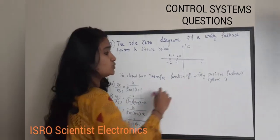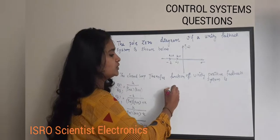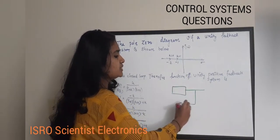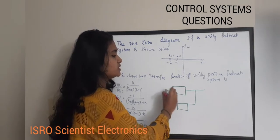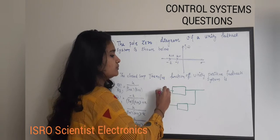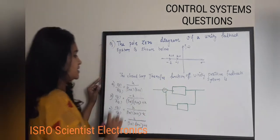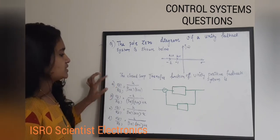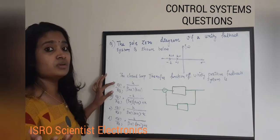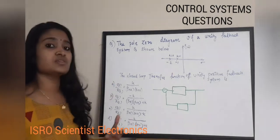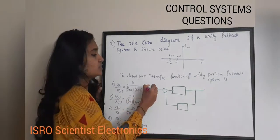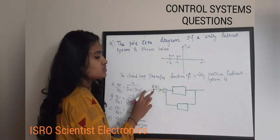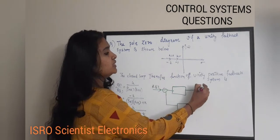Closed loop control systems are basically of two types: systems with positive feedback and systems with negative feedback. For a system with negative feedback, C represents the output function and R represents the input function, where C(s) is the Laplace transform of the output and R(s) is the Laplace transform of the input.